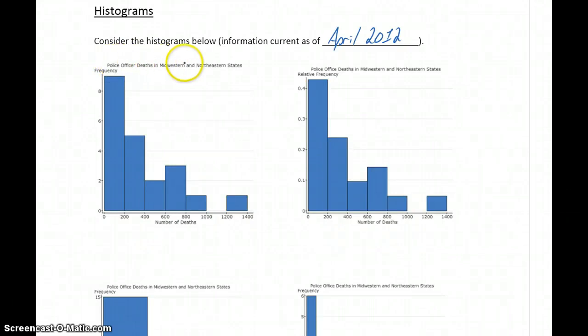So we have a title at the top telling us again this is about police officer deaths in these different states. Our x-axis represents the number of deaths, so these numbers represent the different data values. So a state might have had 400 deaths, 650 deaths, those are the data values we collected. And then along the y-axis we have the frequency, which is showing us how many states had that number of deaths. So four different states, eight different states, one different state.